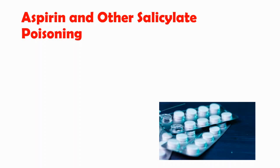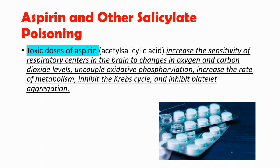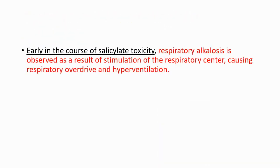In this video I will explain the symptoms, diagnosis, and treatment for aspirin and other salicylate poisoning. Toxic doses of aspirin increase the sensitivity of respiratory centers in the brain to changes in oxygen and carbon dioxide levels, uncouple oxidative phosphorylation, increase the rate of metabolism, inhibit the Krebs cycle, and inhibit platelet aggregation.